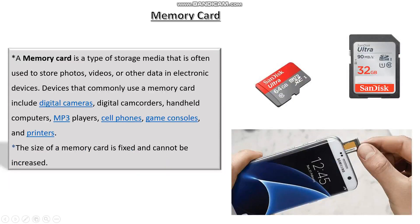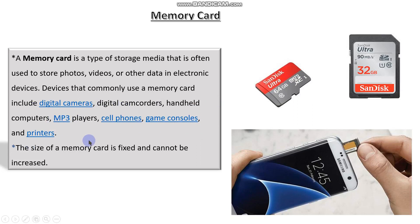Memory card. A memory card is a type of storage media often used to store photos, videos and other data in electronic devices. We all use smartphones and have these kinds of mini memory cards. Devices that commonly use a memory card include digital cameras, digital camcorders, handheld computers, MP3 players, cell phones, game consoles and printers. The size of the memory card is fixed and cannot be increased — if it says 64 GB, you can't increase it to 128 or more, so you must be careful before buying.